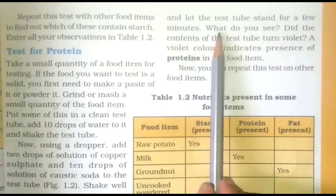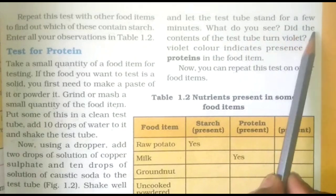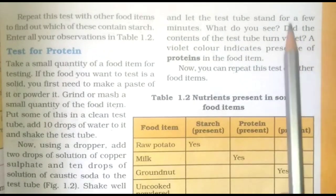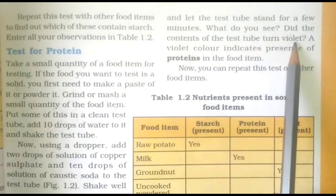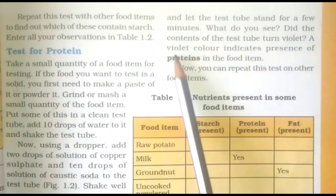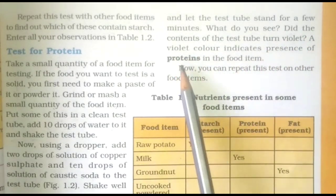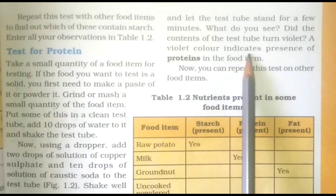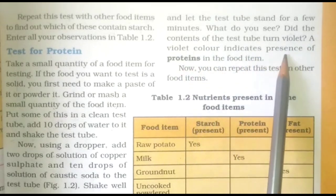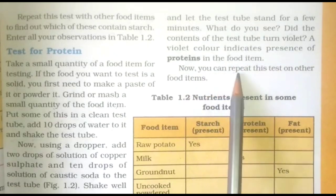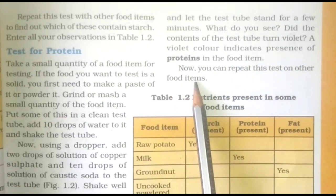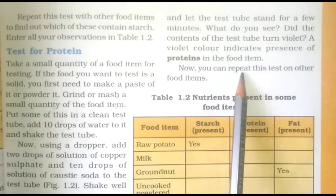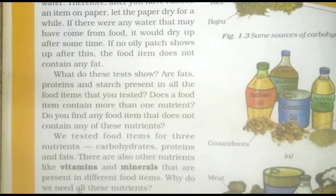What do you see? Did the contents of the test tube turn violet? आपने क्या देखा? क्या test tube के contents violet color में बदले? A violet color indicates the presence of proteins in the food item. अब आप इस test को अन्य food items पर repeat कर सकते हैं।